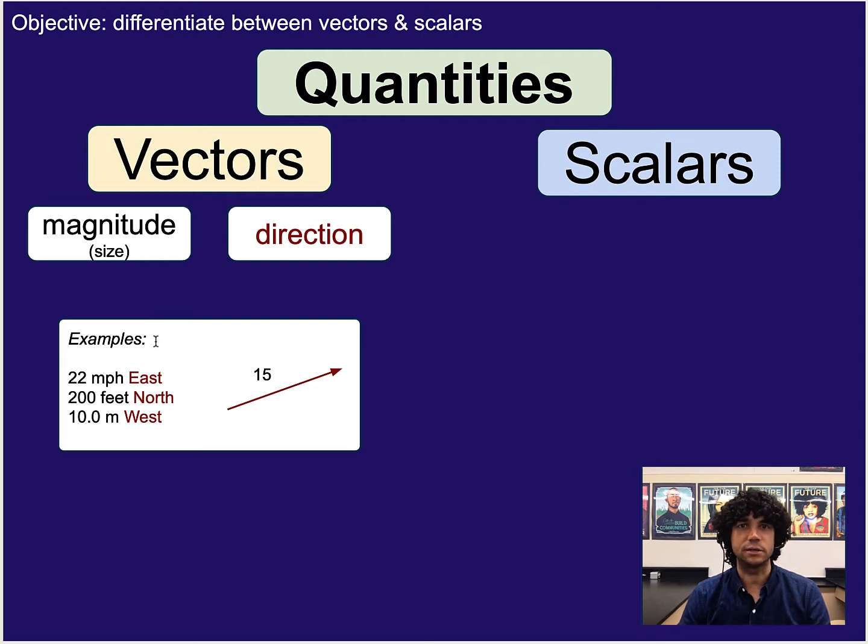These are just some examples of vectors. Some other ones that exist that we'll talk about in the future are forces, those are also vectors. We've talked about momentum before as well, and so that is a vector where again we have to factor in direction. And sometimes we'll have negative directions to show opposites of whatever positive was.